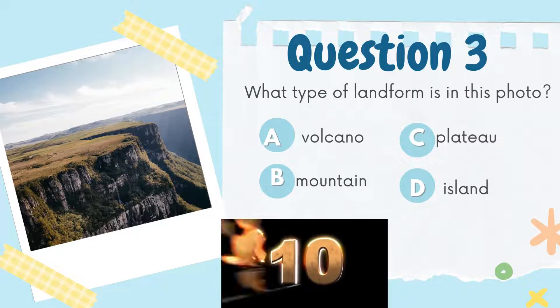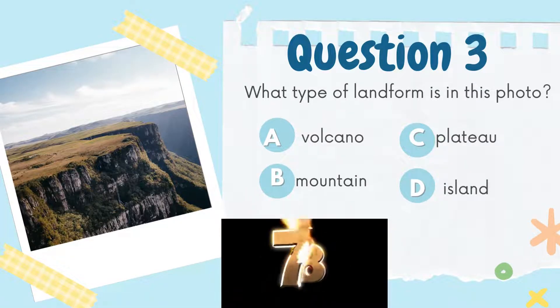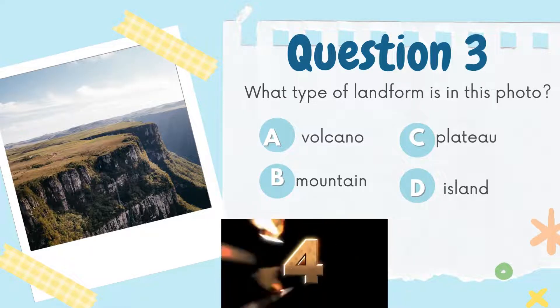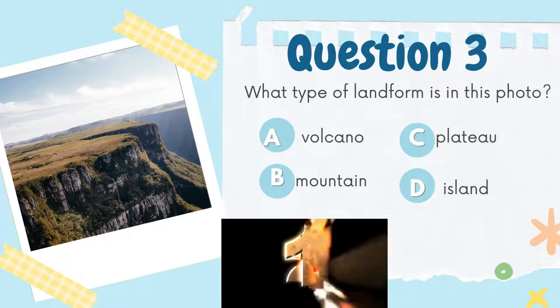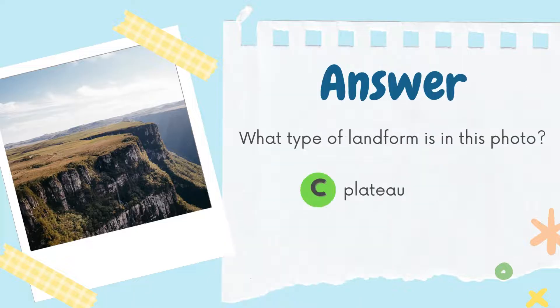Here is your question number 3. What type of landform is in this photo? Option A: Volcano. Option B: Mountain. Option C: Plateau. Option D: Island. And the right answer is Option C: Plateau.